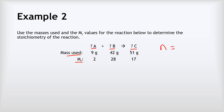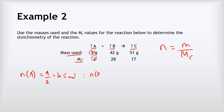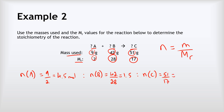Let's find the number of moles using n = m/MR. Moles of A: mass is 9 grams divided by MR of 2, giving 4.5 moles. Moles of B: mass is 42 grams divided by MR of 28, giving 1.5 moles. Moles of C: mass is 51 grams divided by MR of 17, giving 3 moles.